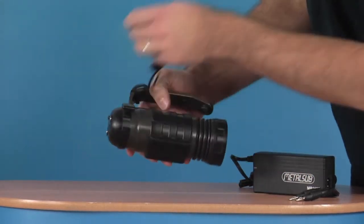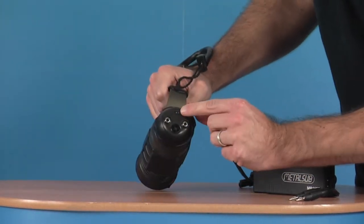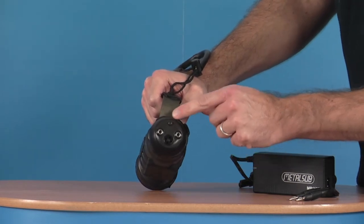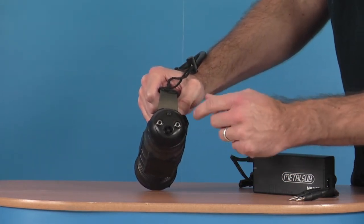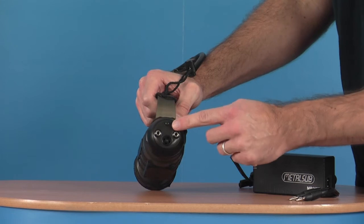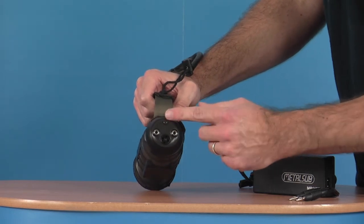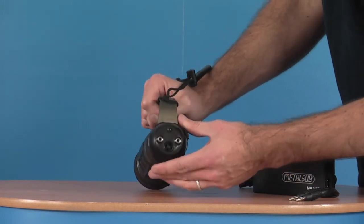The actual unit on the back has an indicator. This shows you your battery life. It goes through three colours. You have green, orange, amber and red.